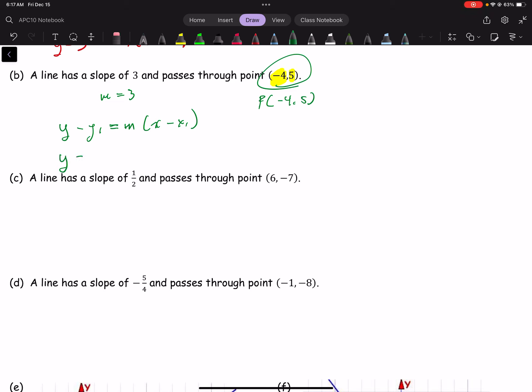So y minus, and I take a look at my y value. My y value is 5. So y minus 5 equals my slope. My slope is 3. x minus. And I take a look at my x value here. The x value is negative 4. So I just simply write in negative 4. And this will simplify into y minus 5 equals 3, open brackets x. Now if we notice, subtract negative 4 actually becomes plus 4.